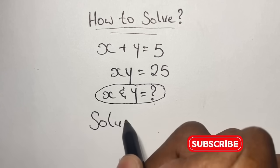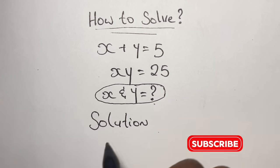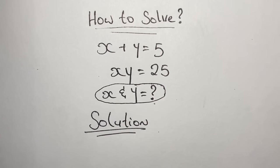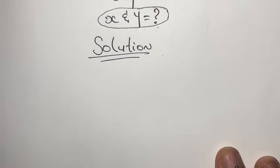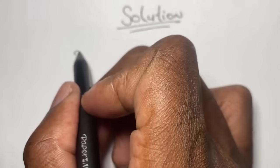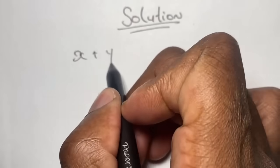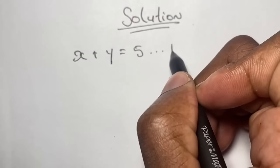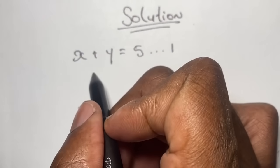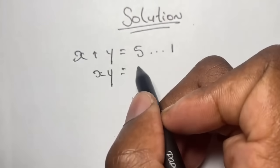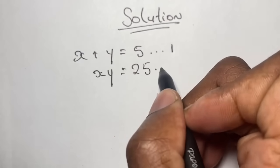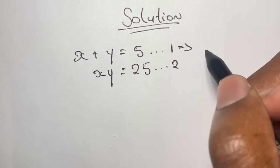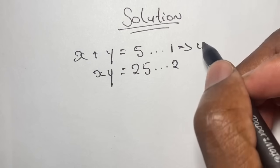You may want to save this video for future references as we are about to solve this pure simultaneous equation. Alright, so here we go. Our first equation says x plus y is equal to 5 — this is equation 1. Our second equation states that x times y is equal to 25 — this is equation 2. To solve this pure simultaneous equation we use what we call the substitution method.